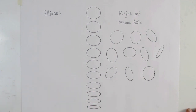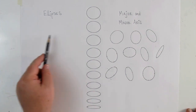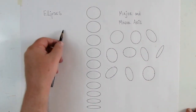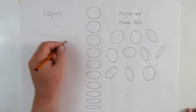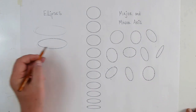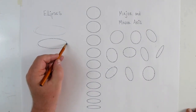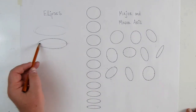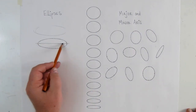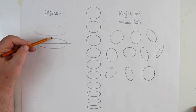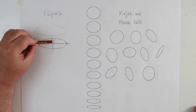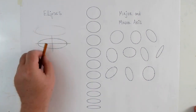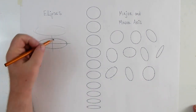If we draw an ellipse, a true ellipse can be cut in half to find the major and minor axis, and it should cut straight in half — this side should be the same as that side, and this should be the exact middle.